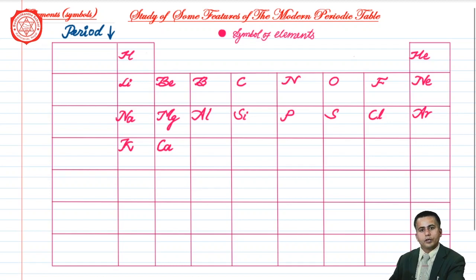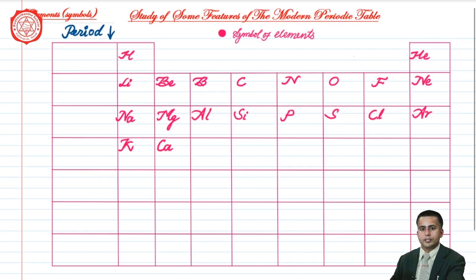I have shown you a portion of the periodic table containing 20 elements, in which the extreme left top part contains hydrogen and the extreme right top part contains helium. At the bottom line on the left side you can see K, that is potassium, and Ca, that is calcium. Now let me provide the atomic number for all these elements.